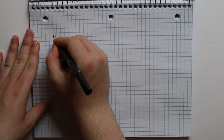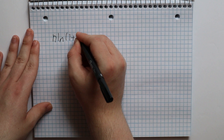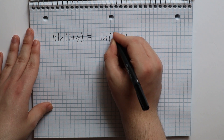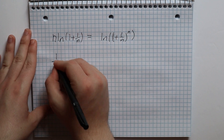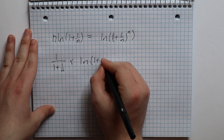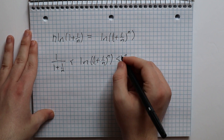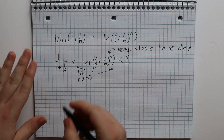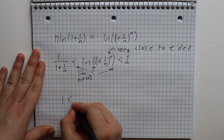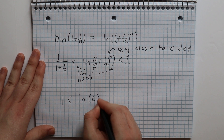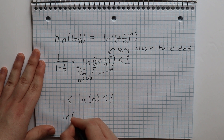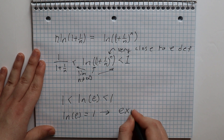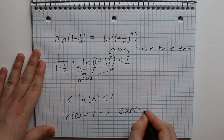Returning to our inequality, which contained n times natural log of 1 plus 1/n, we can rewrite it as: 1/(1 + 1/n) is less than natural log of (1 + 1/n) to the power of n, which is less than 1. The second term is starting to look very similar to our definition of e — all that is missing is the limit as n approaches infinity. Taking that limit, we get 1 is less than or equal to the natural log of e, which is less than or equal to 1. By the squeeze theorem, the natural log of e equals 1, which in turn means that the exponential of 1 is equal to e. And that was our final lemma.